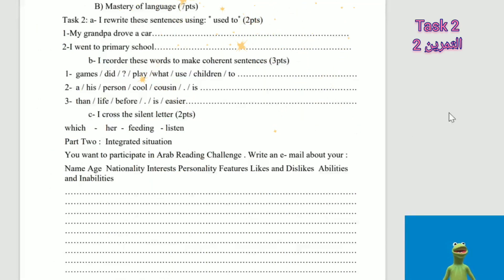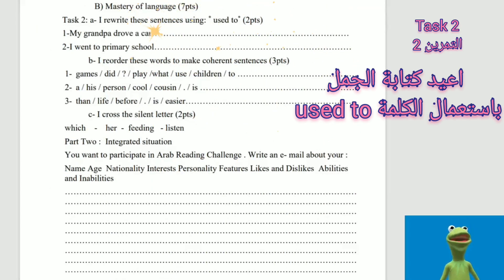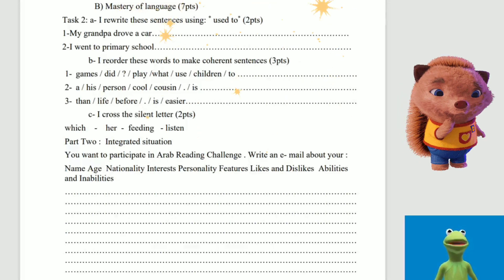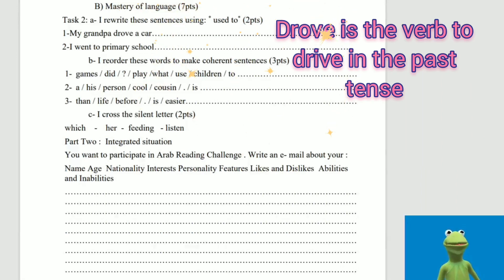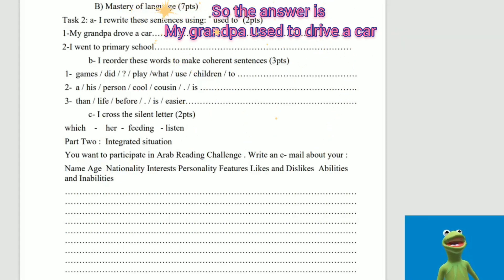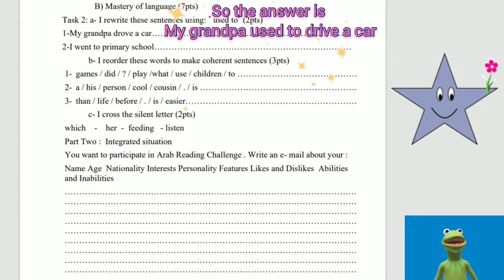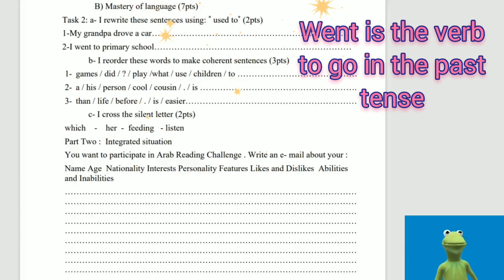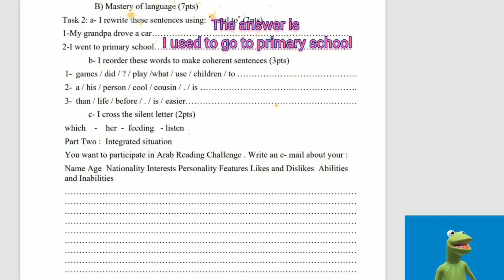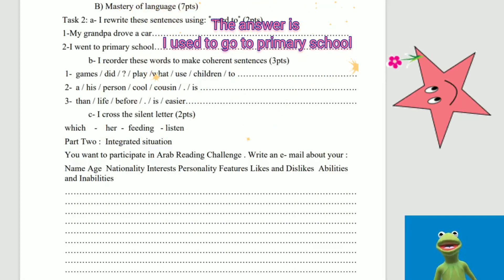Task 2: I rewrite these sentences using 'used to.' One: My grandpa drove a car. 'Drove' is the verb 'drive' in the past tense, so the answer is: My grandpa used to drive a car. Well done! Two: I went to primary school. 'Went' is the verb 'go' in the past. The answer is: I used to go to primary school.